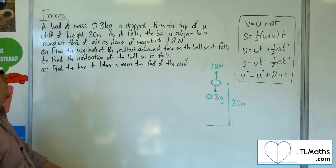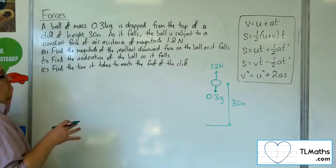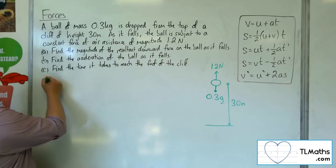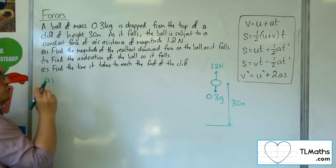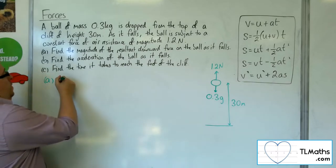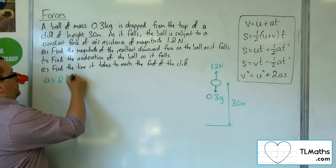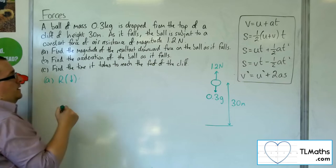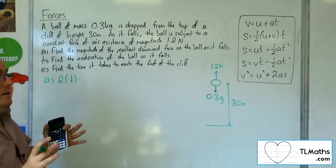So find the magnitude of the resultant downward force on the ball as it falls. The resultant is that F net in F equals ma. If I resolve downwards, I'm not going to put it equal to ma,